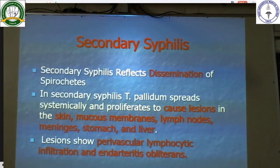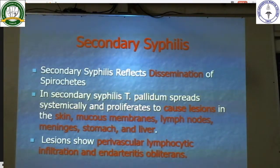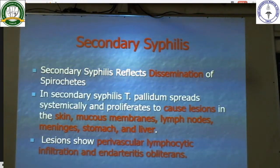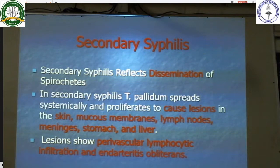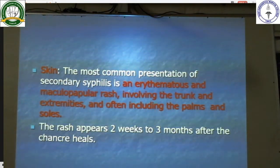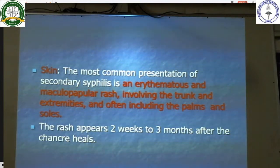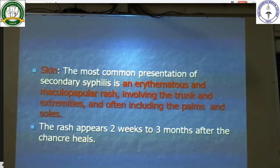In secondary syphilis, there is dissemination of spirochetes. Treponema pallidum spreads systemically and proliferates to cause lesions in the skin, mucous membranes, lymph nodes, meninges, stomach, and liver. Lesions show perivascullar lymphocytic infiltrate and endarteritis obliterans. In the skin, the most common presentation is a erythematous maculopapular rash involving the trunk and extremities, often including the palms and soles. The rash appears 2 weeks to 3 months after the chancre heals.